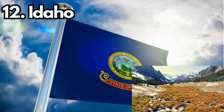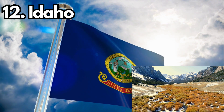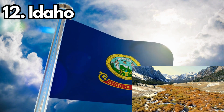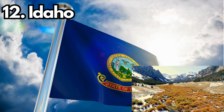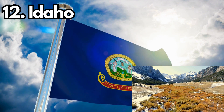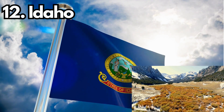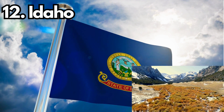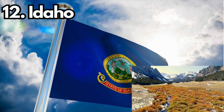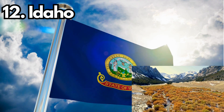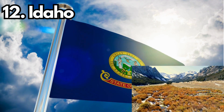12. Idaho. Design: The Idaho state flag consists of a blue field with the state seal in the center. Meaning: The seal features a miner and a woman representing equality, liberty, and justice. The banner below reads 'State of Idaho.' History: The current design was adopted in 1907.